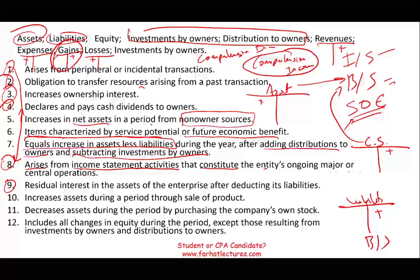Number nine: residual interest in the assets after the enterprise deducts its liabilities. Do you know what assets minus liabilities equals? Assets minus liabilities equals equity — that's the answer. Equity is composed of many accounts: revenues, expenses, gains, and losses — which together form comprehensive income — as well as investment by owners and distribution by owners.